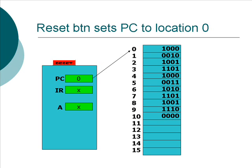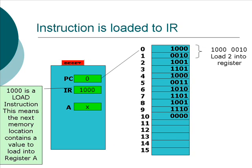The reset button has been pressed, which has set the PC to zero, which means that the instruction in memory location zero is going to be loaded into the instruction register. The contents of memory location zero is 1, 0, 0, 0 — that gets loaded into the instruction register.